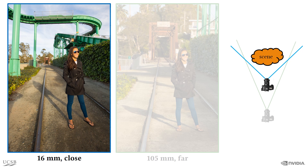Since a short focal length lens provides a wide field of view, this image captures a large portion of the background. Furthermore, because the camera is close to the subject, there is more perspective distortion on the foreground.